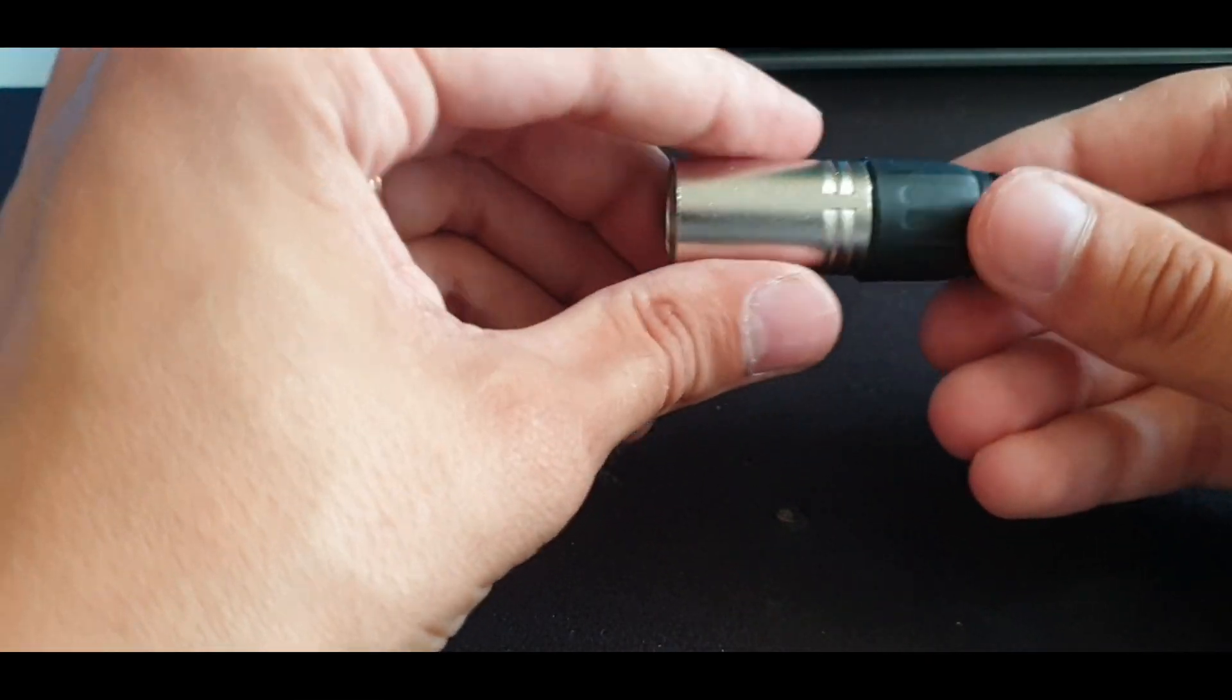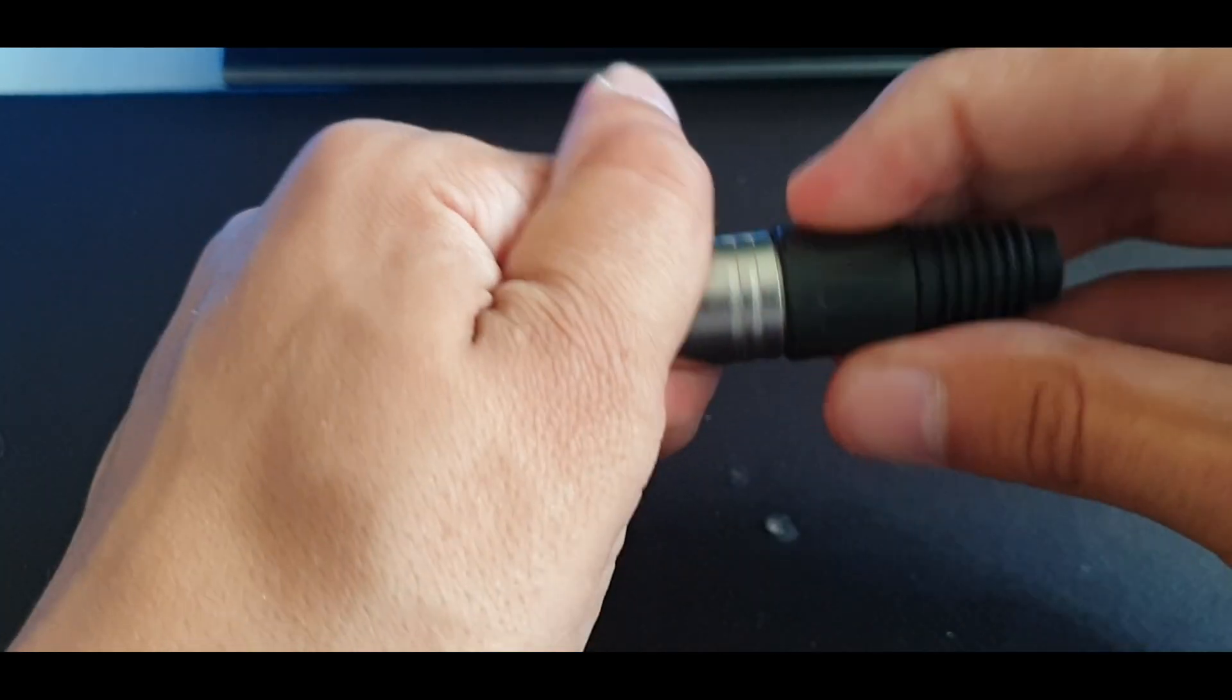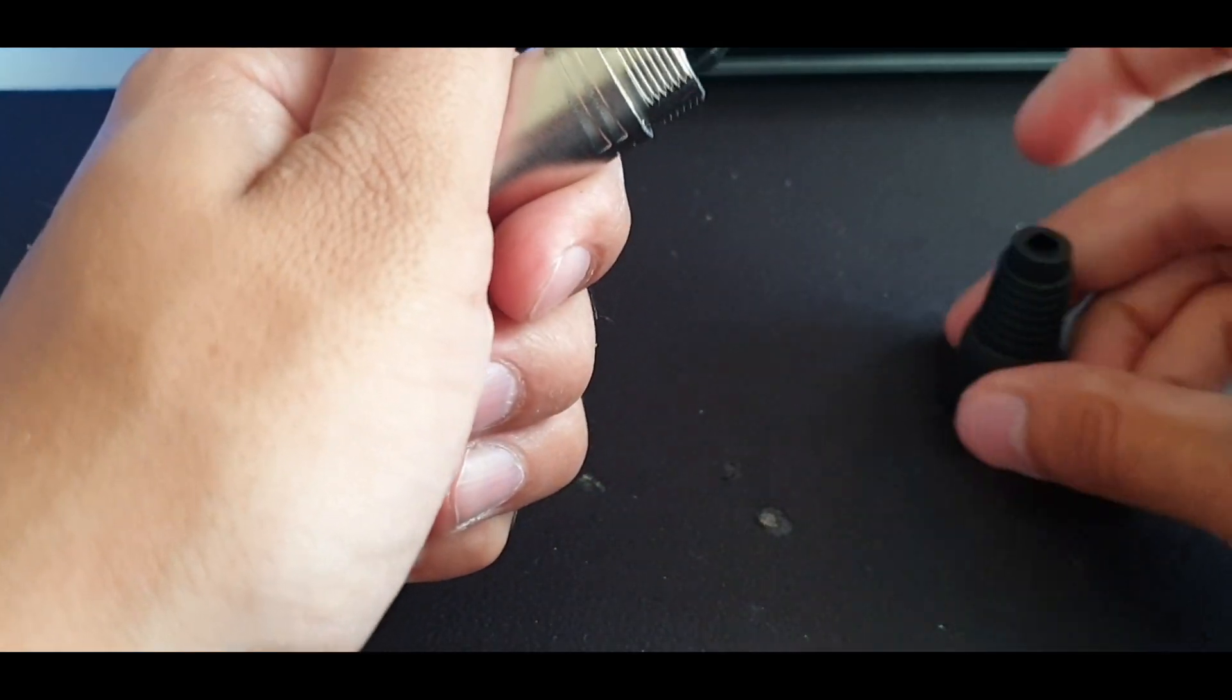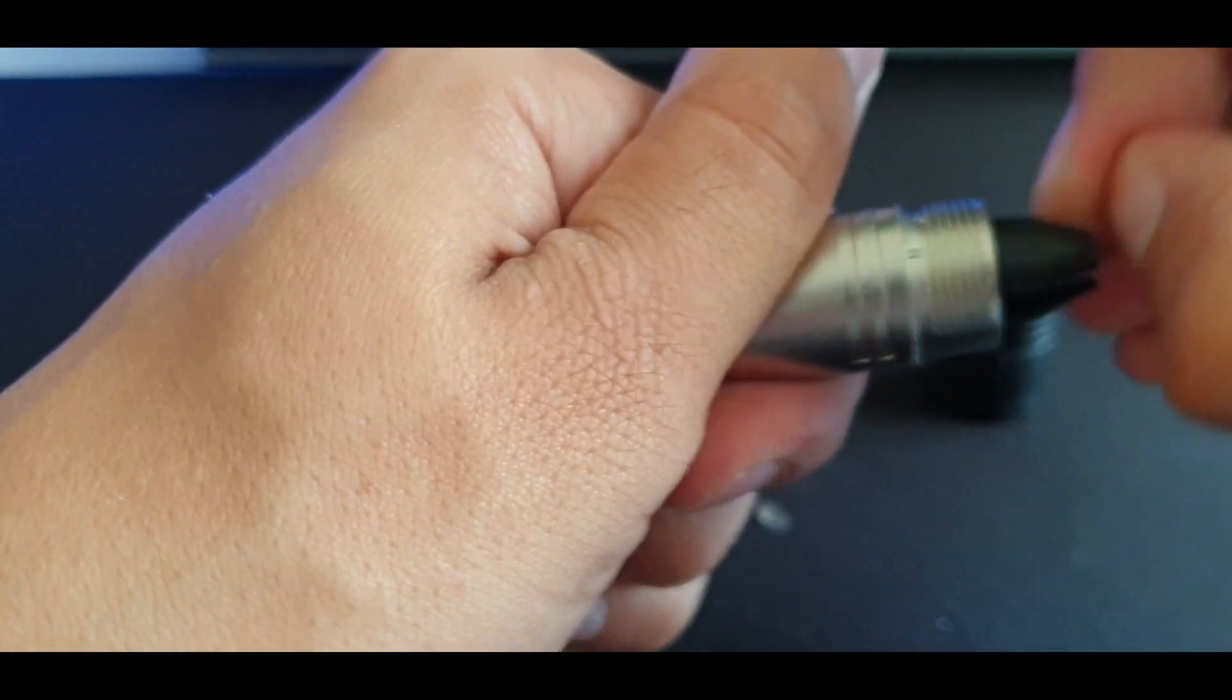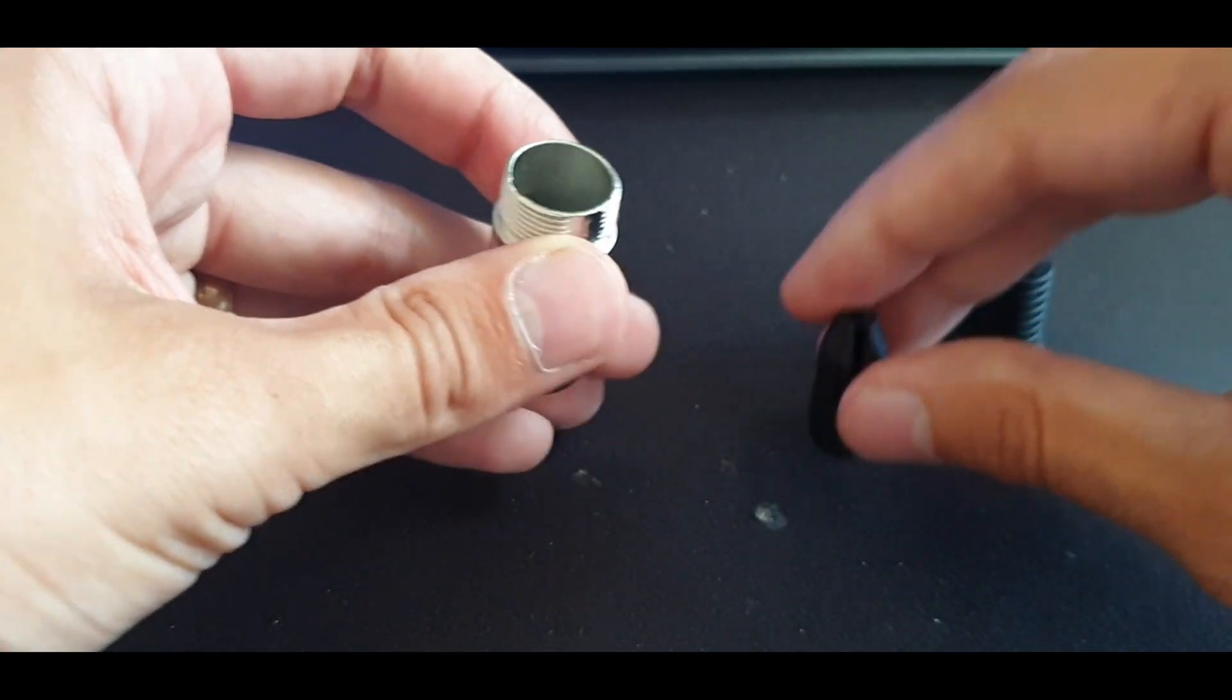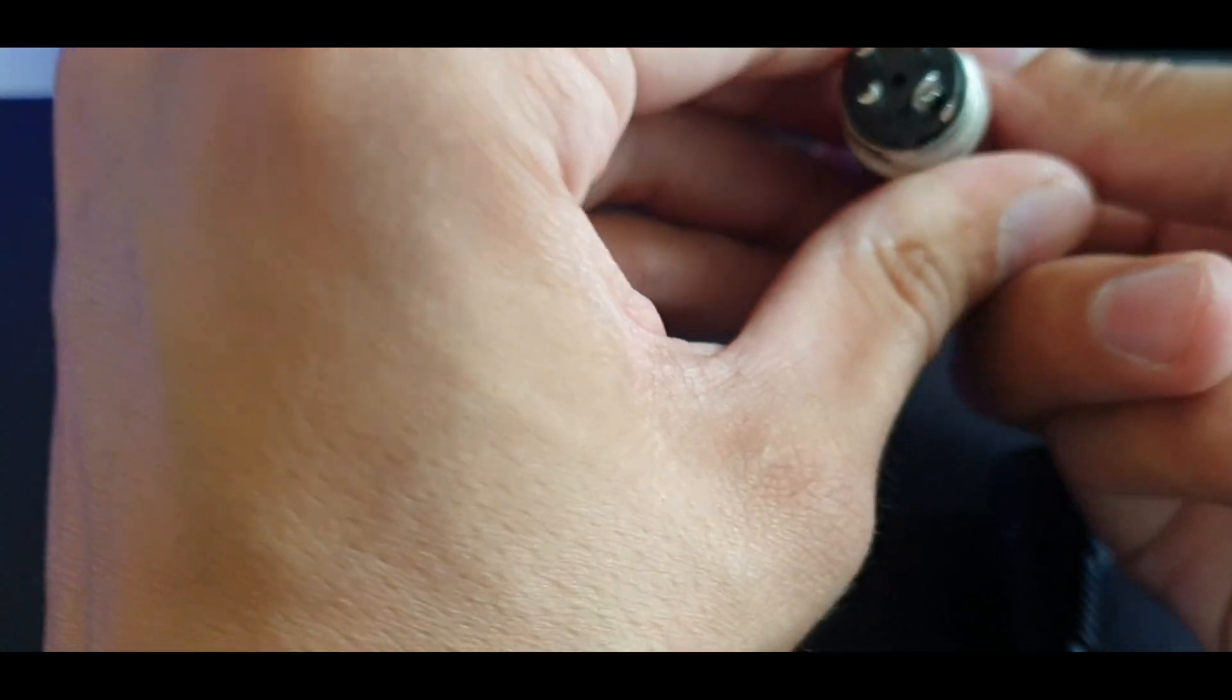Okay, so the first step is to get your DMX plug and you just want to start taking it apart. So I'm going to put the cap there, I'm going to take out the little plastic grommet. And then you just want to get the pins and push them out towards you, like so.